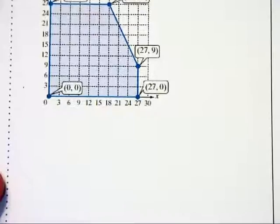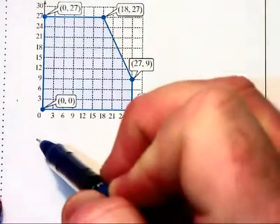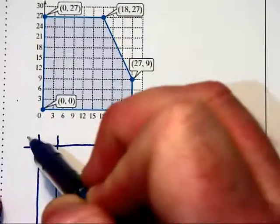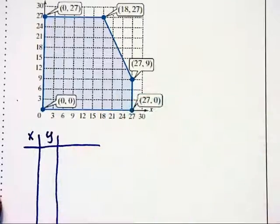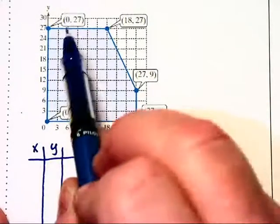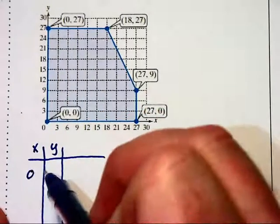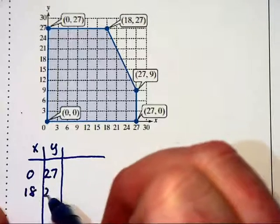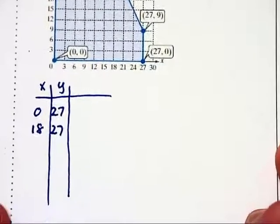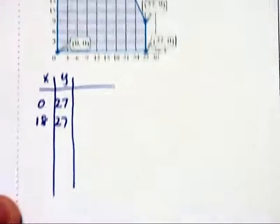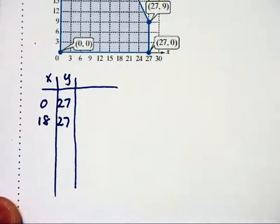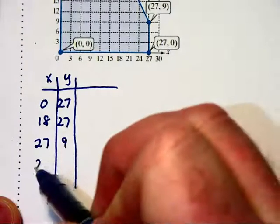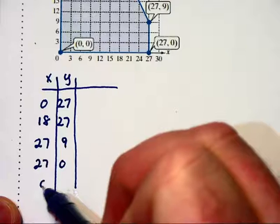So let's take this feasibility region and create an xy chart here. Now I'm going to start by writing these points that are up here at the top. So let's take (0, 27) and (18, 27) before I move this up and make it disappear. We want to include (27, 9), (27, 0), and (0, 0). Those are the points being substituted in.